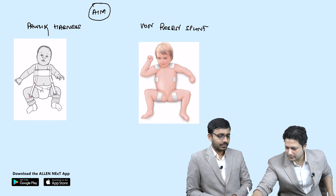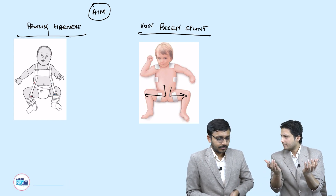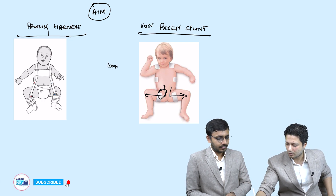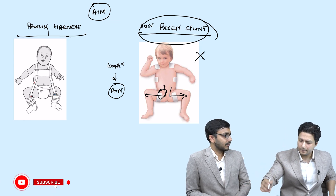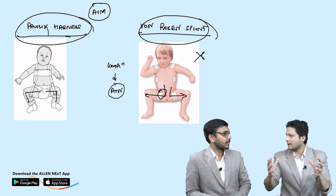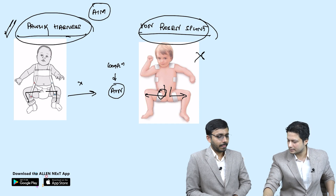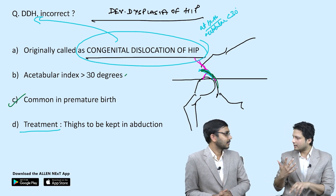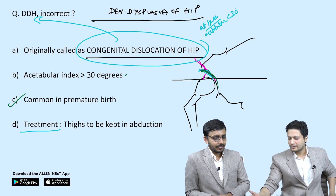The difference: in von Rosen splint, thighs are fixed in abduction with no permissible movement at the hip joint. Prolonged fixed abduction may cause avascular necrosis of the femoral epiphysis — so these splints are now obsolete. In the Pavlik harness, thighs are held in abduction but movement is permitted, greatly reducing the complication risk. Pavlik harness is the treatment used today. Ultrasonography is the screening investigation of choice in newborns.